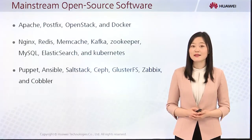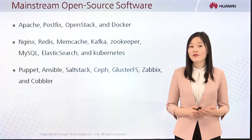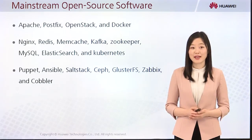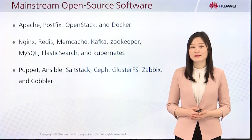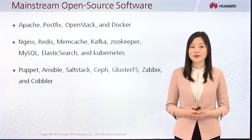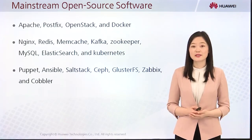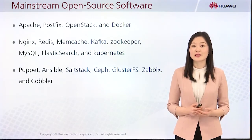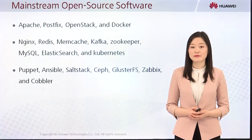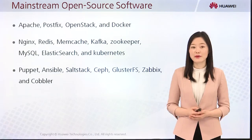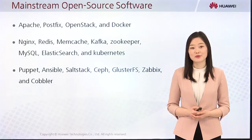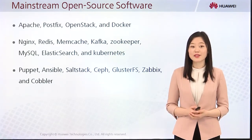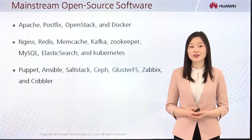Let's learn about open source software. Following are some open source examples: Apache, which is a web server; PostFix, a mail server; OpenStack, the cloud platform; Docker, the software container, and engines often used in internet architecture; as well as Redis, a main caching and distributed memory caching system. There are Kafka and ZooKeeper big data analysis platforms, MySQL database management system, Elasticsearch, which is an analytics engine, and Kubernetes, which is a container cluster manager.